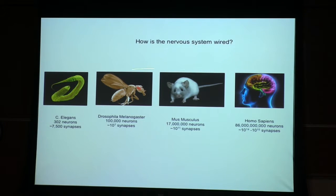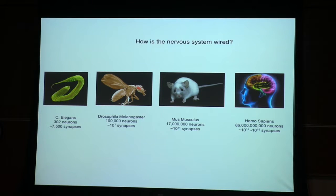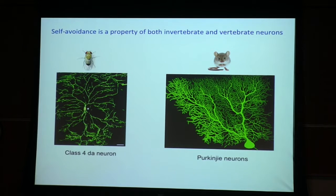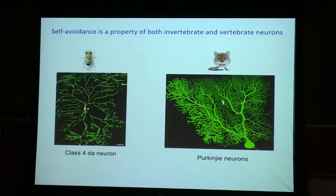Now I'm going to discuss a totally different problem. This is a presumptuous title: how is the nervous system wired? I'm not going to tell you how, but this table shows how many synapses and how many neurons there are in different organisms. That these neurons wire in precise ways is absolutely remarkable. The one phenomenon I'll be concerned with is self-avoidance. Here's an example of a cell body in Drosophila with neurites extending from it — you can see they don't touch each other. They avoid each other. And here's an example of neurons in a vertebrate — in mouse — showing the same self-avoidance phenomenon.